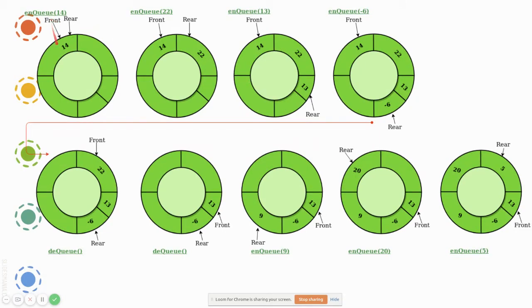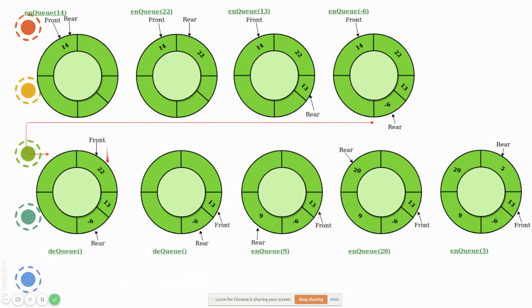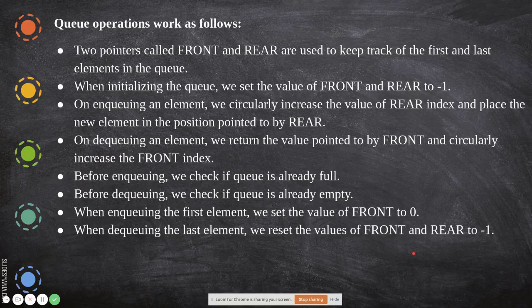Let us take some examples of circular queue operations. Initially, the queue is empty — both front and rear point to the same position. When you enqueue 22, rear is updated and the data is placed there. Continuing, you enqueue 13 and rear moves again. When you dequeue, the element pointed by front is removed and front moves to the next position. After two dequeues, you can enqueue 9, 20, 5, and so on. Only when all positions are occupied is the queue considered full.